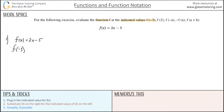The second step is to substitute x on the right-hand side for the indicated value of x on the left-hand side, which they told us should be negative 3. So basically all we're going to do is take 2 and instead of multiplying it by x, we're going to multiply it by the indicated value of x — negative 3 — and then just minus 5.